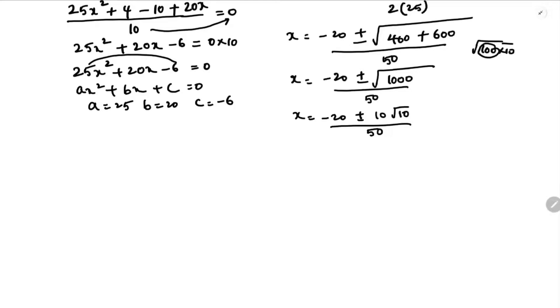Now if you will simplify this further here. So x = -20... Otherwise we can take common here. 10 I will take common: -2 ± √10 by 50. 0, 0 cancel. So x = (-2 ± √10)/5 is the answer. You can write in two ways: x = (-2 + √10)/5 and x = (-2 - √10)/5. These are the two answers for this.